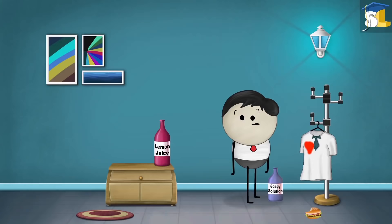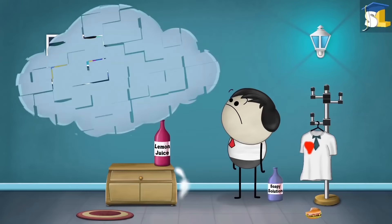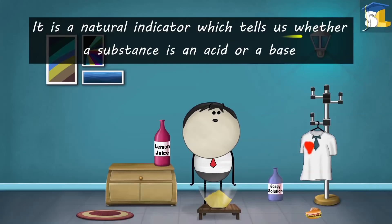Do you know why this happened? This happened because the food which fell on the cloth had turmeric in it. The color of turmeric is yellow. It is a natural indicator which tells us whether a substance is an acid or base.